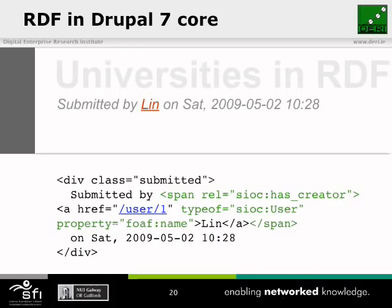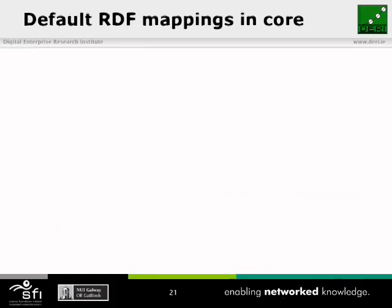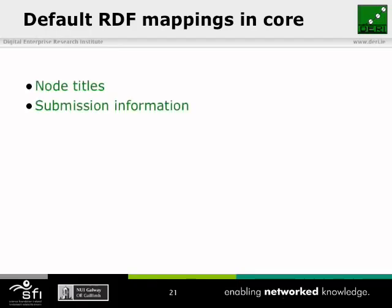Now we have all this extra information about who created this page, what their name is, and the fact that they're a user. What we can do with this is take anything I've posted on this site, extract it, and put it on another site combined with other things I've posted elsewhere. And I can go to other sites and say anything posted by this person identified by this URI, pull it onto my site, so that whenever I post something somewhere else, it automatically gets updated and placed on my site.